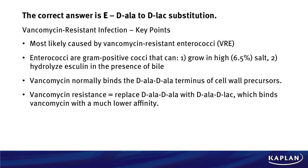Some key points about vancomycin resistance: it's most likely caused by enterococci — VRE, or vancomycin-resistant enterococci, as you'll hear it in the hospital. Enterococci are gram-positive cocci that grow in 6.5% sodium chloride and hydrolyze esculin in the presence of bile — something you don't see with other bacteria, so it should immediately make you think enterococci. Vancomycin works by binding the D-Ala-D-Ala terminus of cell wall precursors. Because it's prescribed so often in the hospital, resistance develops. These organisms replace D-Ala-D-Ala with D-Ala-D-Lac in their cell walls, so vancomycin can't bind as strongly — allowing the organism to resist vancomycin and cause harm to the patient.